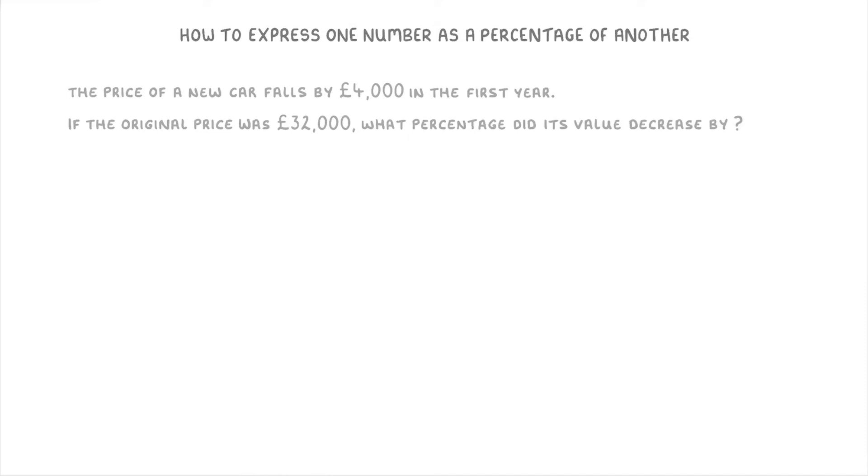So this is basically the same as all of the other questions that we've been doing in this video. The only difference is that we need to pick the important numbers out for ourselves. So this time, we're basically trying to find £4,000 as a percentage of £32,000. So we're going to have to do 4,000 divided by 32,000, and then times that by 100 to get 12.5% as our answer.